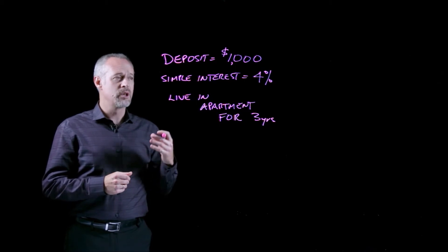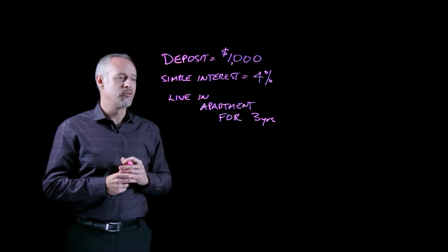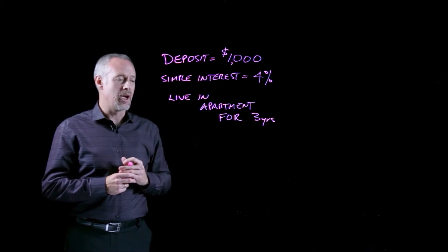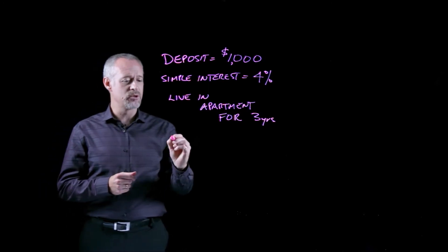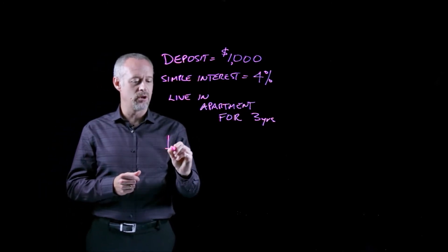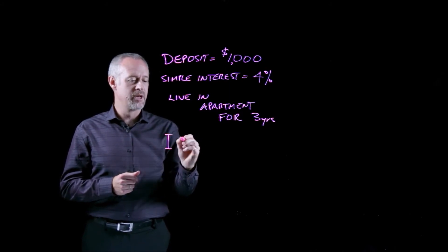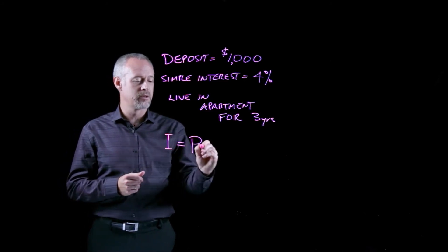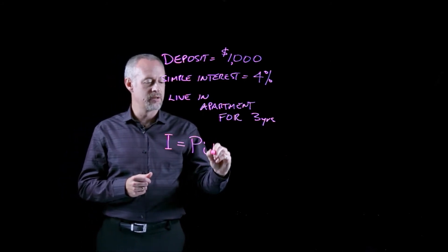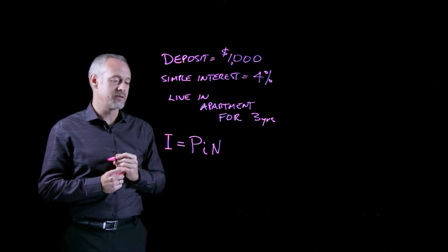We'll use lowercase i for the interest rate, and we'll use n for the number of periods. And the formula for calculating the interest, so just the interest portion, we'll call I. A capital I will be the actual amount of the interest. So the interest portion, we can write as the present amount times the interest rate times the number of periods. And it really is just that simple.